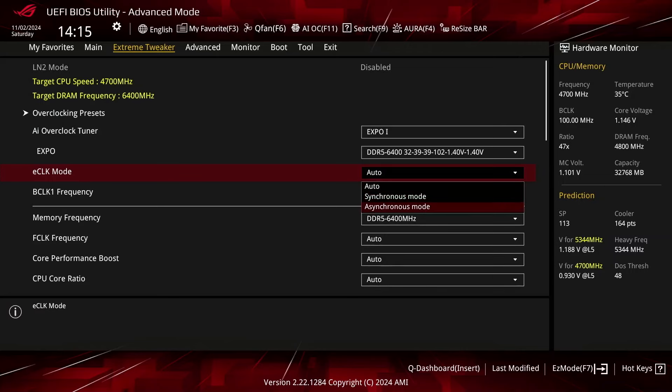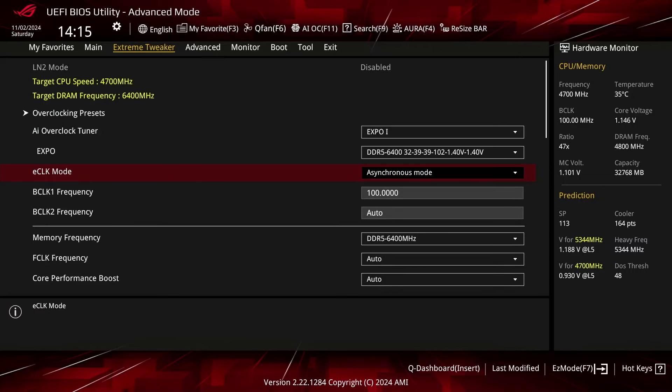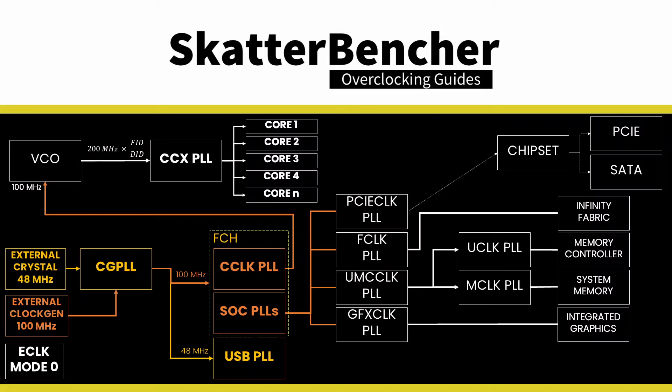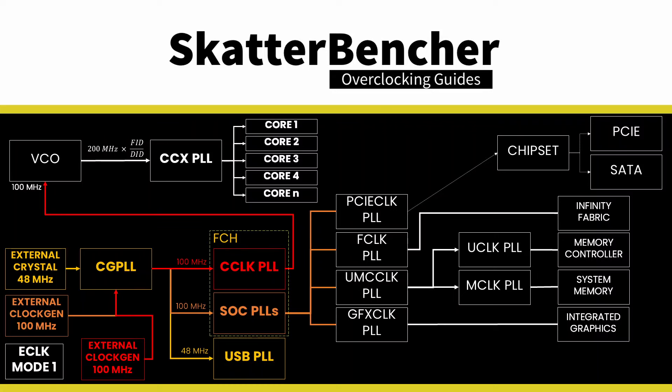Set eClock mode to Asynchronous mode. This enables an external clock generator to drive the CPU frequency. Ryzen 9000 has three clock generator modes: Internal, External Synchronous, and External Asynchronous. In External Asynchronous mode, there are two external 100 MHz clock generators. One is used exclusively for the CPU core frequency. Using a synchronous eClock is the only way to increase the maximum frequency of a Ryzen 9000 processor, as the Precision Boost Overdrive FMAX Boost Override tool only enables up to 200 MHz higher frequency.